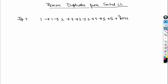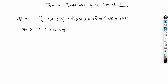We need to remove the duplicate elements from it. 1 appears twice so remove the duplicate; 2 is okay; 3 appears twice so remove the duplicate; 4 and 5 are okay. The output should be 1, 2, 3, 4, and 5. We need to make these changes in the given list itself.